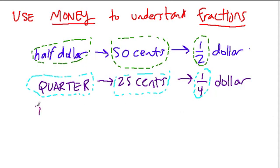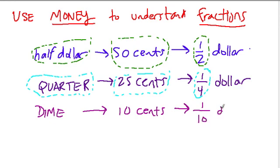What about a dime? Well, a dime, of course, is 10 cents. What's that going to be as a fraction? Well, since it takes 10 dimes to make a dollar, we could say one dime is one tenth of a dollar. So now we could say every time you see one tenth, try and think of 10 cents or a dime.